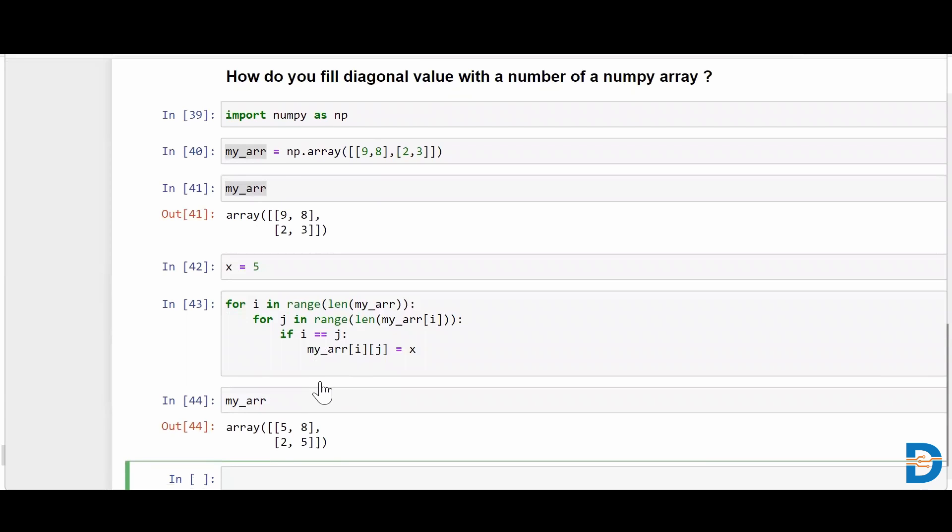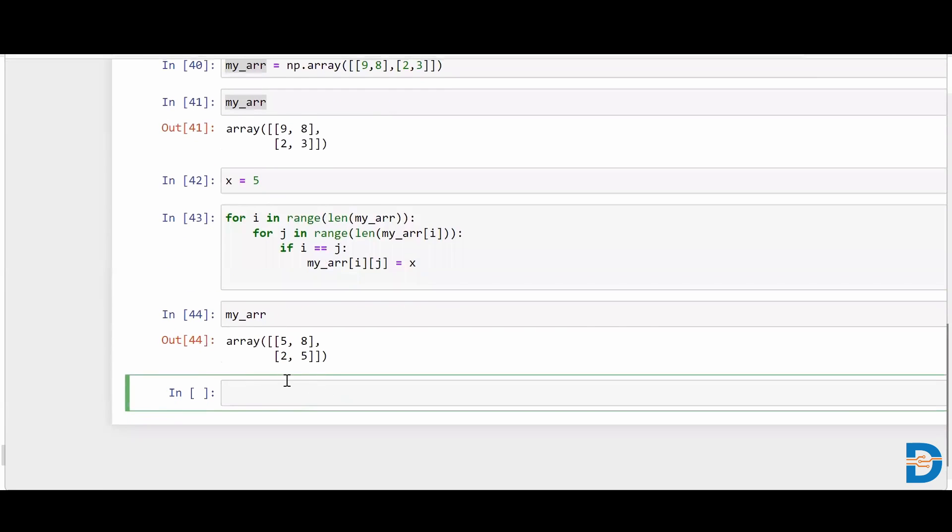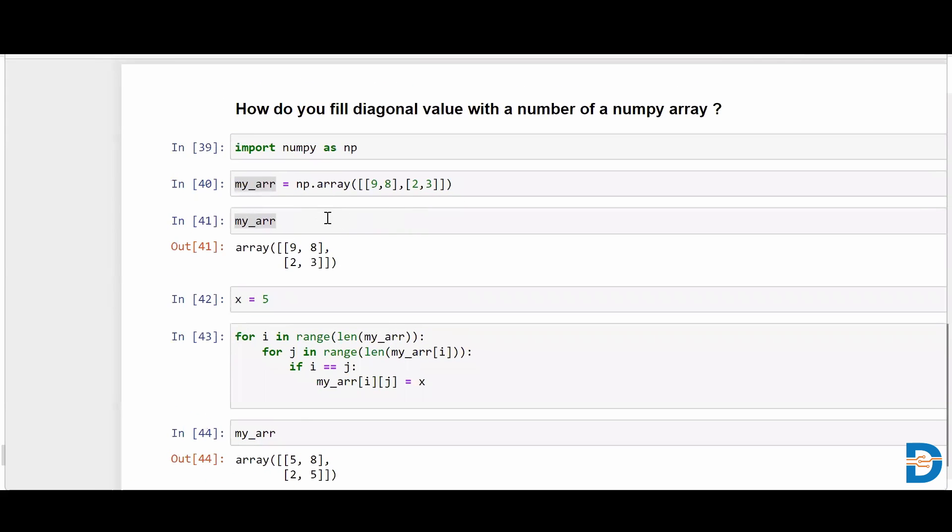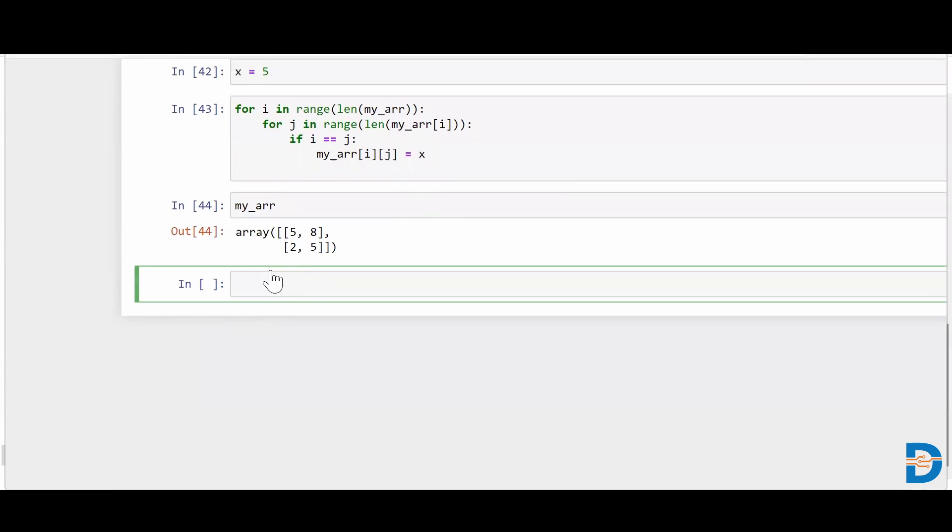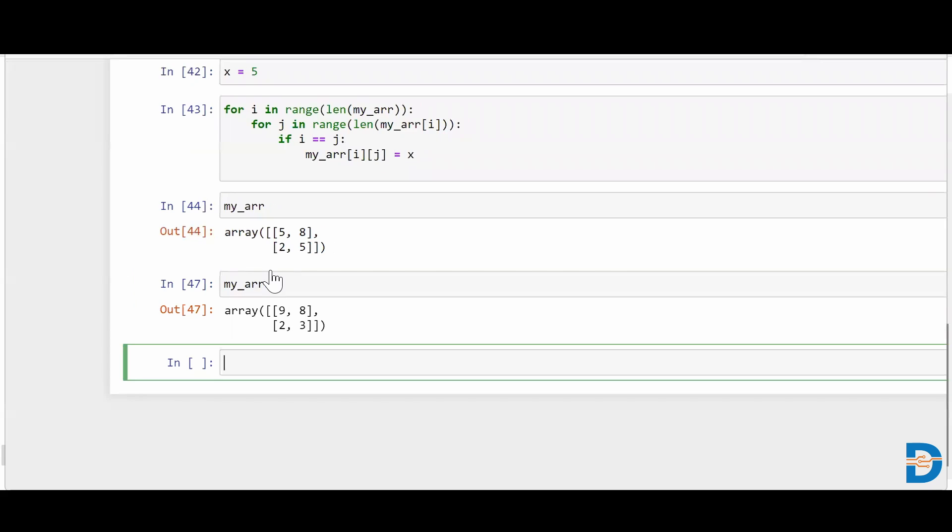The second one which is quite simpler, if I just run this cell again, my_arr, you can see that we again have initialized my_arr with whatever we have initialized previously. Let me just run it.